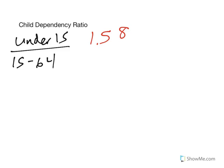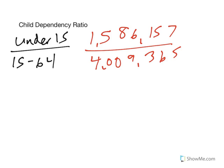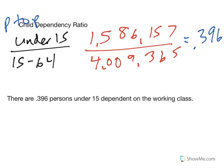Going into the child dependency ratio, we need under 15 to the working class, 15 to 64. Our under 15 group is 1,586,157 compared to 4,009,365. That ratio with such big numbers means nothing, so we divide and get 0.396. Hopefully you recognize neither one of these are the total, so this is part to part. There are 0.396 persons under 15 dependent on each person in the working class. Each person in the working class supports yourself and 0.396 of a person under 15.